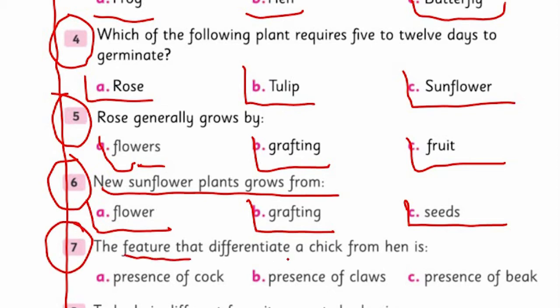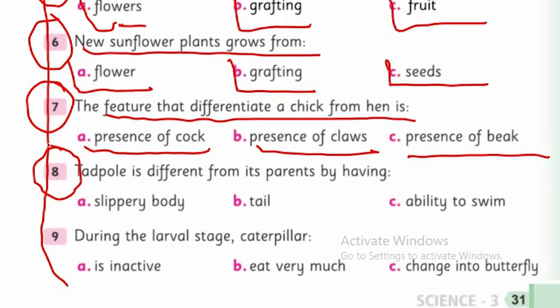What differences were there when you studied young ones with their parents? Was it presence of cock, presence of claws, or presence of beak? You saw one red-colored feature. Question eight: Tadpole is different from its parent by having what - slippery body, tail, or ability to swim? If you look at it in detail, you can answer this question.